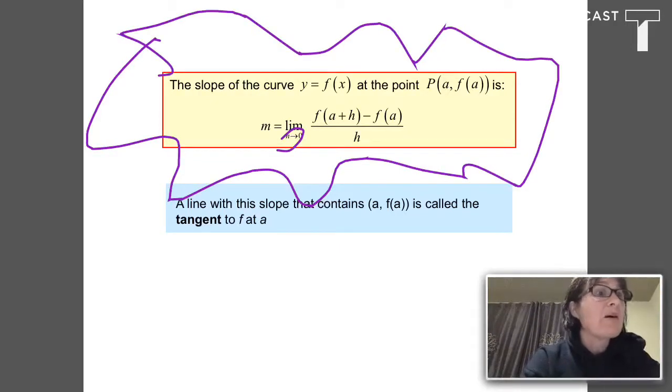This is the slope of the curve at point P. If you want to write the tangent line, an equation for the line tangent to the curve F at point P, we can use point slope form with this slope, this M value, as the slope, and then the point X and Y for the point.